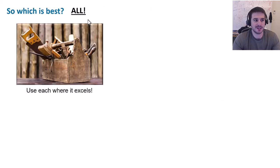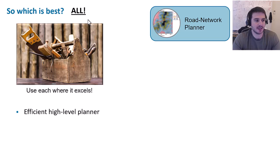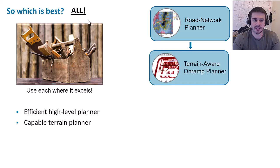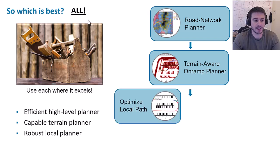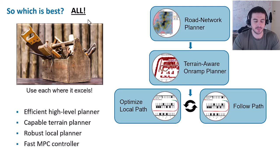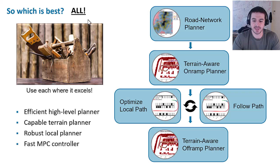The answer is all of them — you use each one where it fits. In our navigation stack we decided on an efficient high-level planner, which is our road network planner, appended with a terrain-aware on-ramp planner for getting onto and off of that road network, since the road network doesn't cover everything. We also have a robust local planner that loops between generating a local reference path along the global reference path and following it with a fast MPC-based controller. Once we reach the end of our road network route, we use our terrain-aware off-ramp planner to plan a path between the endpoint of the road network and the true destination.